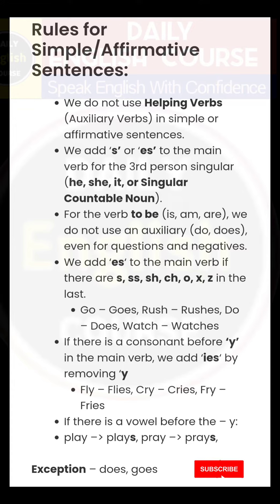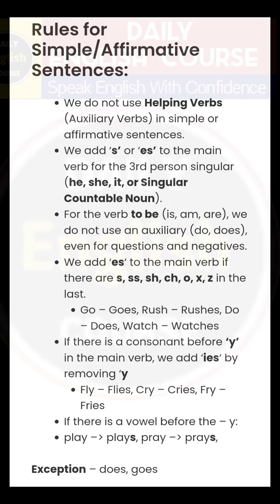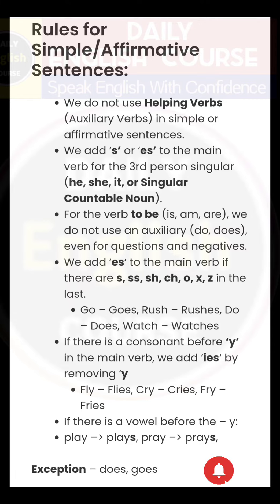If there is a consonant before the y in the main verb, we add -ies by removing the y. For example: fly → flies, cry → cries, fry → fries.